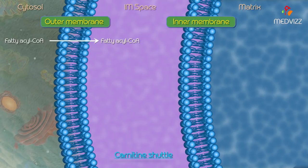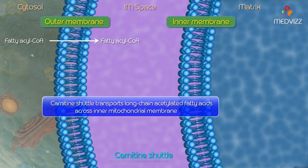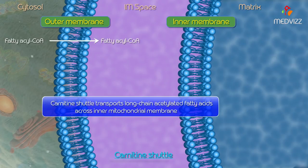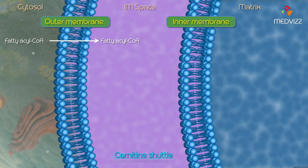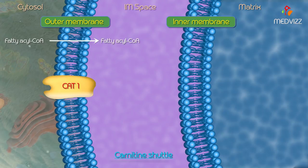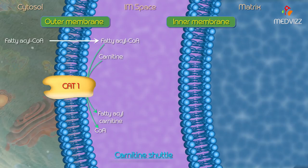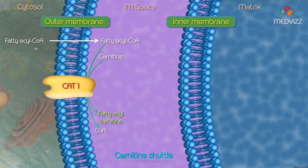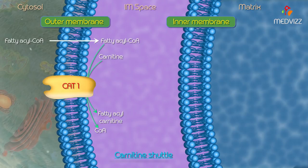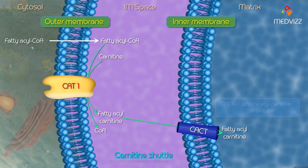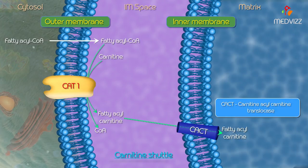The fatty acyl CoA formed in the cytosol is transported into the intermembrane space. The carnitine shuttle is a transport system which transports activated long chain fatty acids across the inner mitochondrial membrane to reach the mitochondrial matrix. The enzyme carnitine acyl transferase 1 (CAT1), located on the outer mitochondrial membrane, reacts with carnitine to form fatty acyl carnitine, which is the rate-limiting reaction in this pathway.